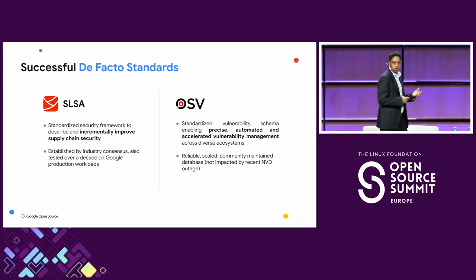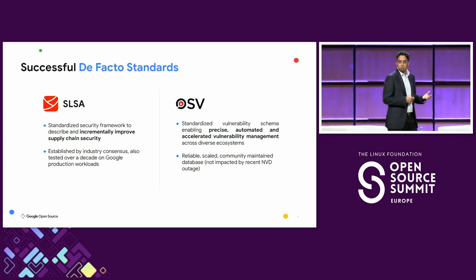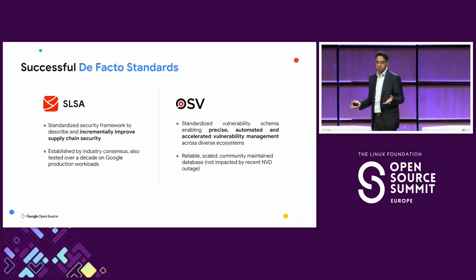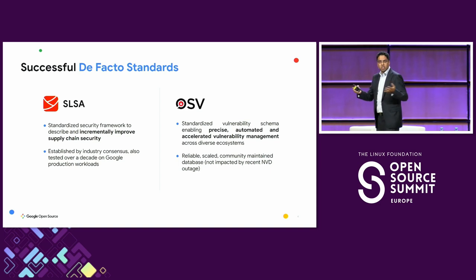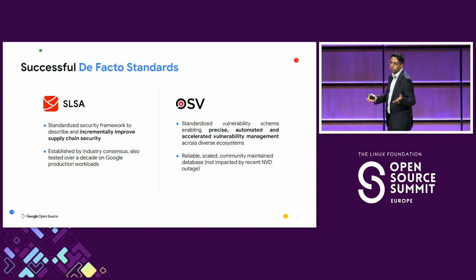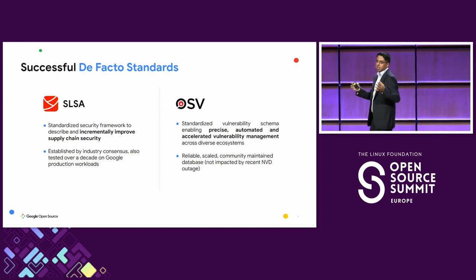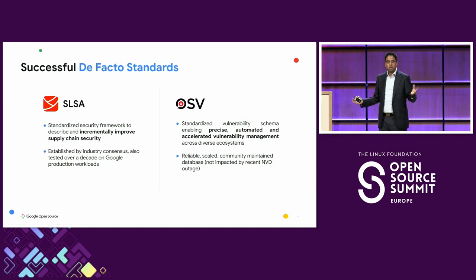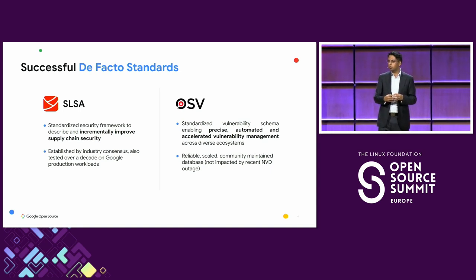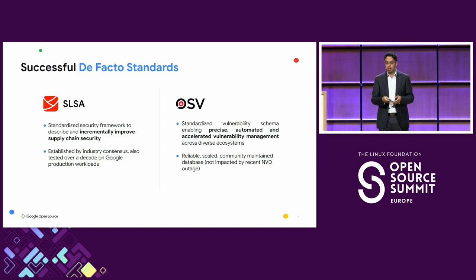The second success story we have is the OSV vulnerability schema. This is now adopted by more than 20 language and OS ecosystems, and they now export all of their vulnerabilities in this very precise, machine-readable, and easily editable format. Thanks to the standardized format, we are now able to aggregate more than 150,000 open source vulnerabilities and provide them to everyone globally with a single API call.